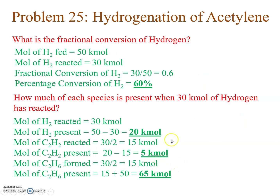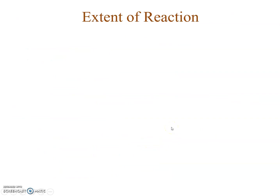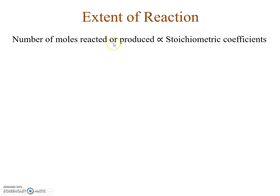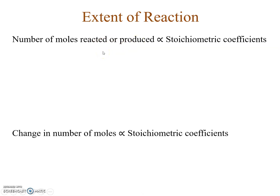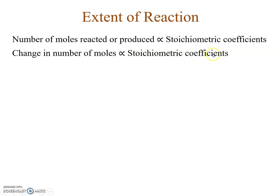I am using this example to point out that the amount of reactant reacted or product formed is directly proportional to the stoichiometric coefficient. The stoichiometric coefficient of hydrogen was 2 and of acetylene was 1, so hydrogen is consumed twice as fast as acetylene. This leads to the conclusion that the change in the number of moles of any species is directly proportional to its stoichiometric coefficient.